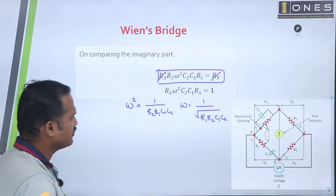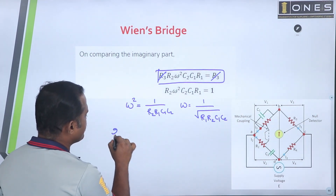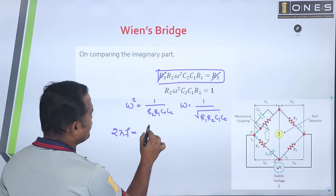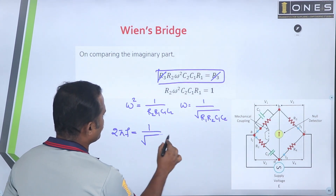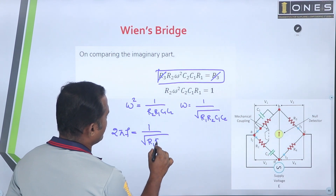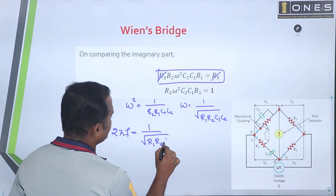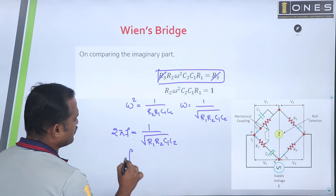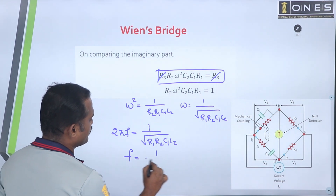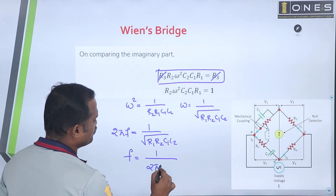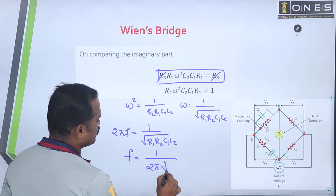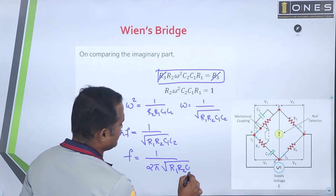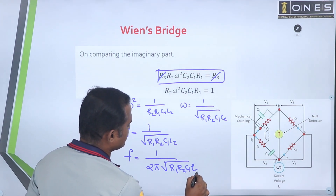Since omega equals 2·pi·f, we get 2·pi·f equals 1 over the square root of R1·R2·C1·C2. Therefore, frequency f equals 1 over (2·pi times the square root of R1·R2·C1·C2).